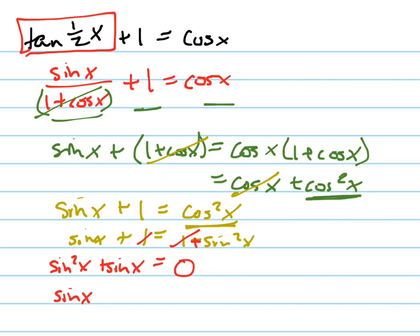I can solve it by factoring sin(x)(sin(x) + 1) = 0, and using the zero product property, either sin(x) = 0, or sin(x) + 1 = 0.